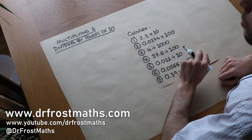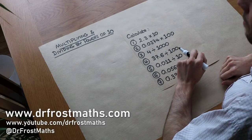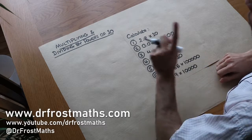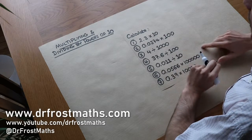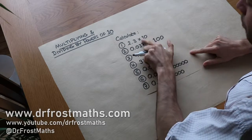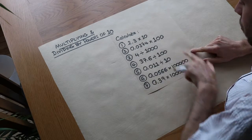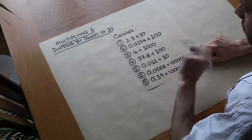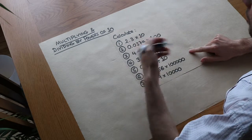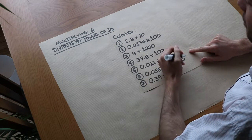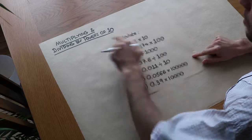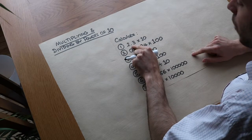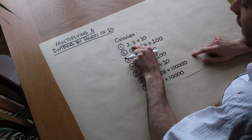Hello and welcome to this video on multiplying and dividing by powers of 10. The key point is that whenever you multiply or divide by 10, 100, 1,000, 10,000, or any power of 10, it shifts where the decimal point lies.